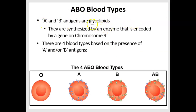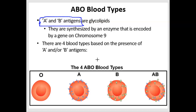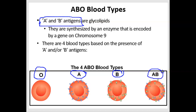Concentrating first on ABO blood groups: the A and B antigens are glycolipids made by an enzyme encoded on chromosome 9. Based on the presence or absence of these antigens, we have four different blood types. If somebody's red blood cells don't have either, they're type O. If they have just A antigens, they're type A. If they have just B antigens, they're type B. If they have both A and B antigens, they're designated type AB. These are the four different blood types based on just the A and B antigens.